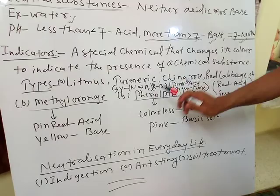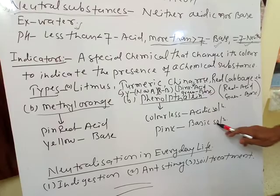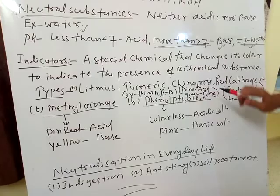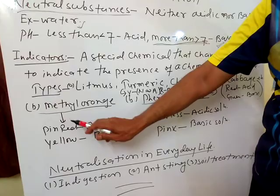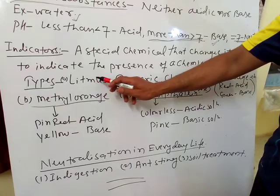The second chemical indicator is phenolphthalein. When we put phenolphthalein in an acidic solution, it becomes colorless — it does not change its color. But if you put phenolphthalein in a basic solution, it turns pink. So these are the indicators — natural indicators and chemical indicators.